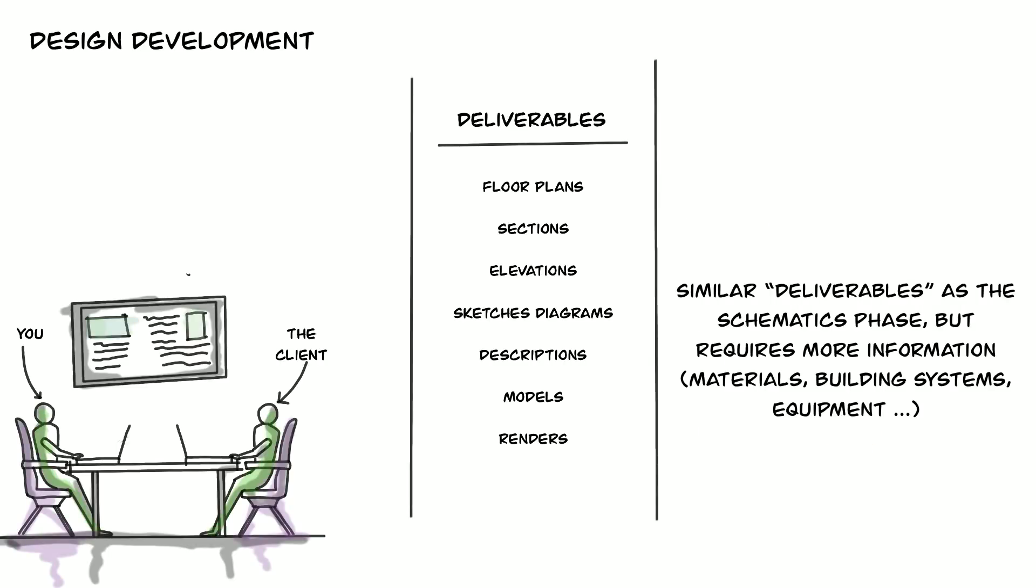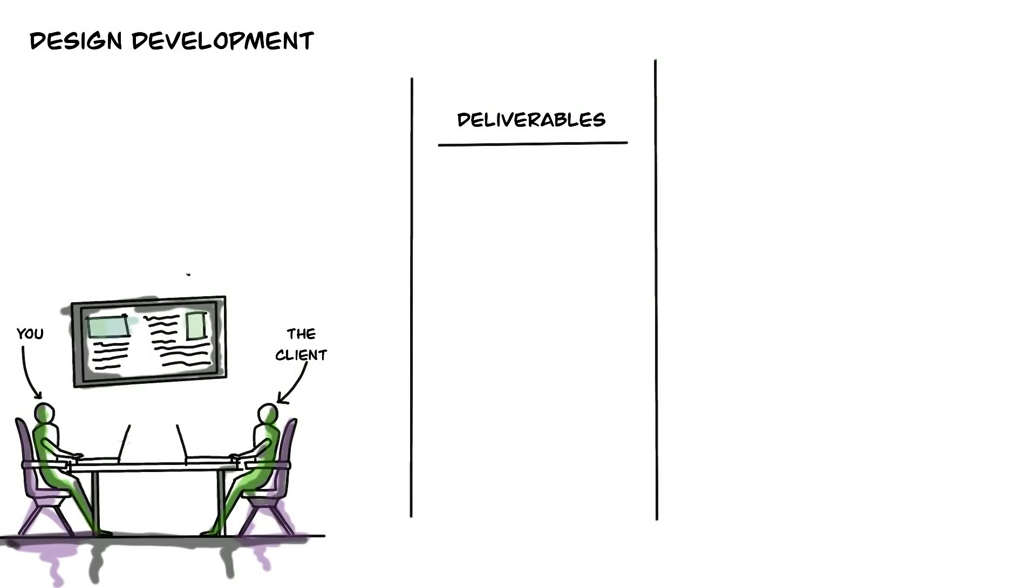In the design development phase, you'll spend your time defining the design that you and the client agreed on. Your deliverables might be similar to the ones you provided in the schematic phase, but now they are further defined. For example, in the schematic phase you might have included a diagram showing the location of the program, but in the design development phase you're starting to show what the actual design will look like and what each space will be made up of.